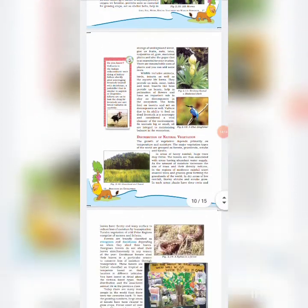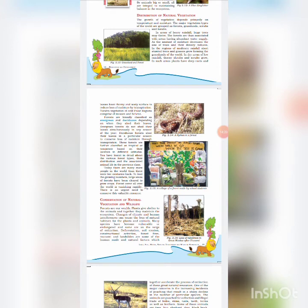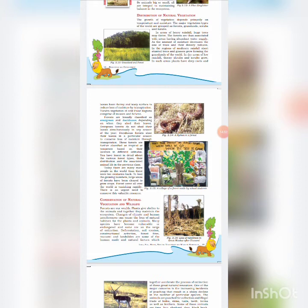The distribution of natural vegetation: the growth of vegetation depends primarily on temperature and moisture. The major vegetation types of the world are grouped as forests, grasslands, scrubs, and tundra. In areas of heavy rainfall, huge trees thrive, as forests are associated with areas having abundant water supply. As moisture decreases, the size of trees and their density reduces. Short stunted trees and shrubs grow in regions of moderate rainfall, while thorny shrubs grow in low rainfall areas.